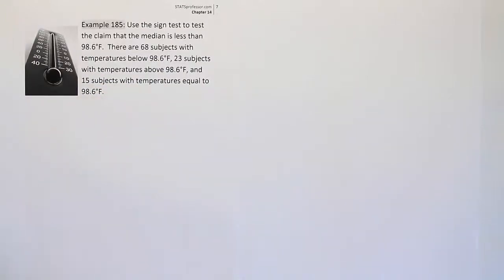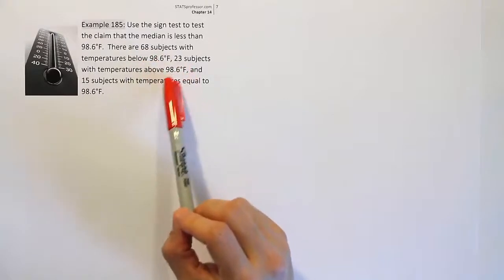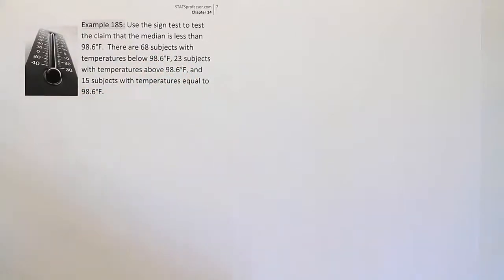Okay, so we're using the sign test, but when we do the sign test normally, we use the binomial table to calculate a p-value. The problem with this example is that there are too many subjects involved in the study, and so we won't be able to use the binomial table. When this happens, we're going to use the large sample approximation. Essentially, we're going to use the normal distribution as an approximation to the binomial distribution.